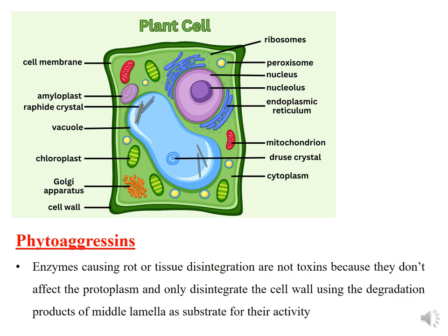Here we will come across another word: phytoaggressions. Phytoaggressions are enzymes which cause rotting or tissue disintegration. They do not affect the protoplasm — they only disintegrate the cell wall, using degradation products of the middle lamella as their substrate. So, phytoaggressions are enzymes, not toxins.